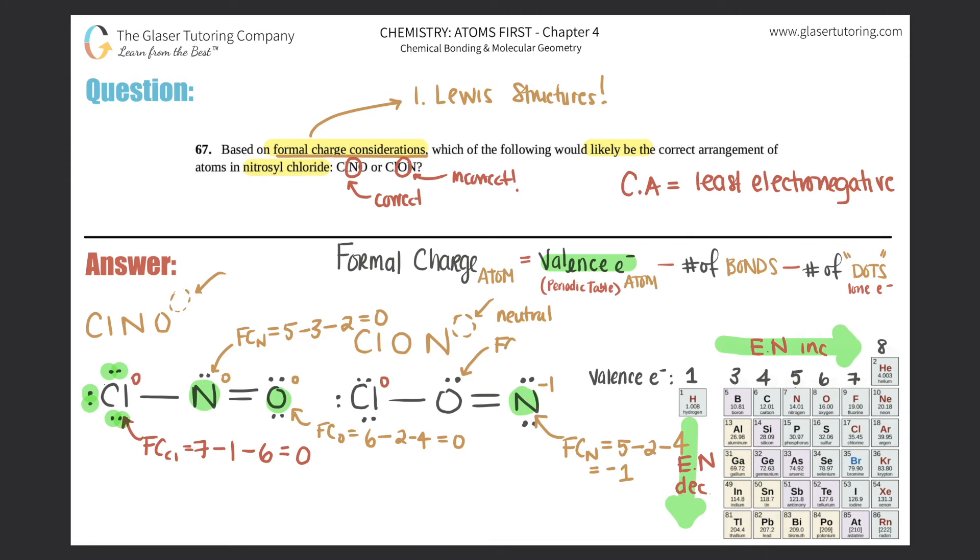So oxygen, formal charge of oxygen is six minus. This oxygen has three bonds. So three minus two dots, two. And six minus three minus two is a plus one. And there you go.